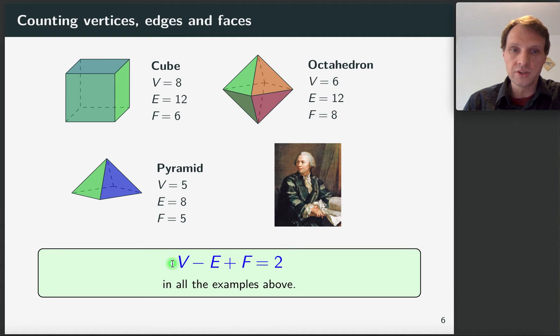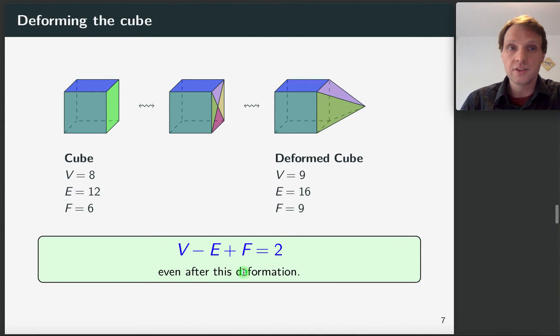There's another curious thing about this number of vertices minus edges plus faces, and that is that it doesn't change if I deform my shape. So here's what I mean by that. Let's take the cube again and let's take this bright green face of the cube. And one thing that we can do to deform the cube is we can just add another vertex in the middle, which creates also these new edges and these triangles here.